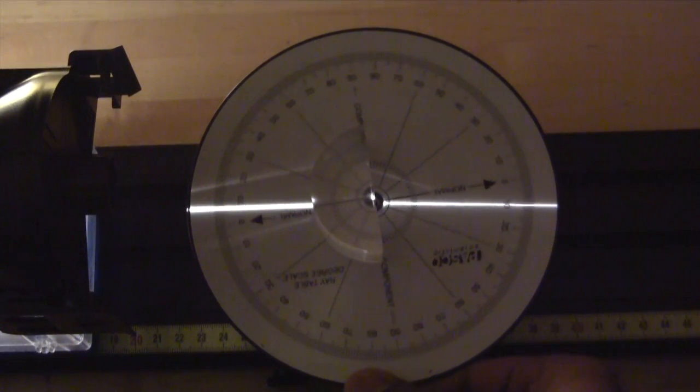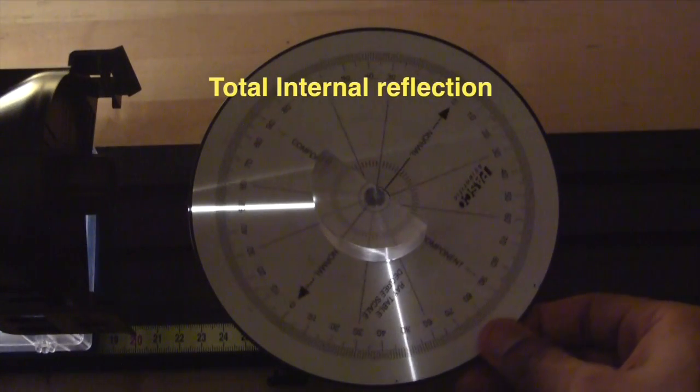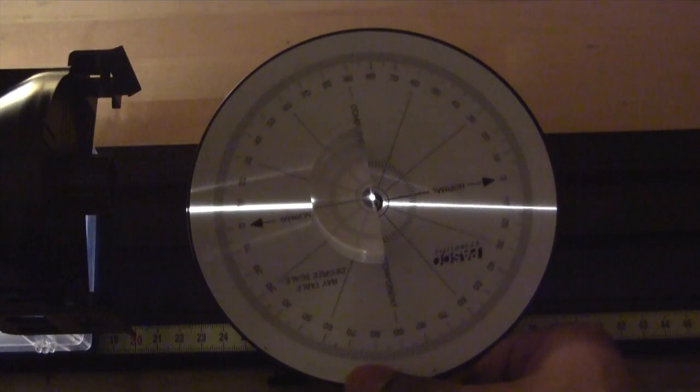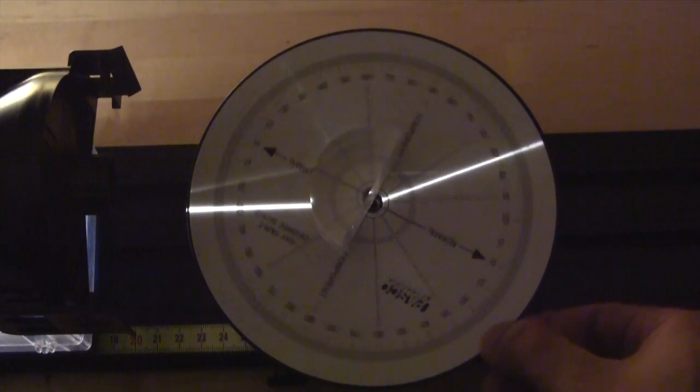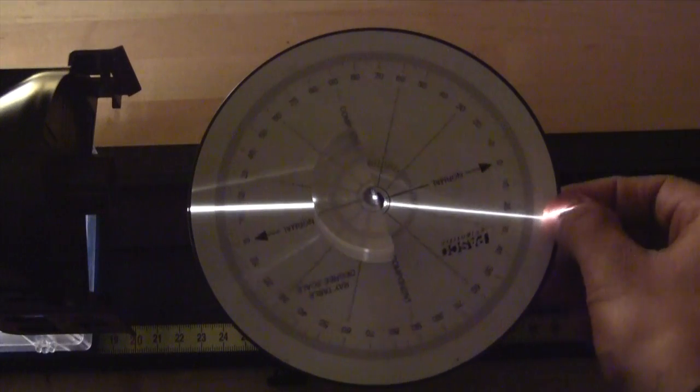If you keep increasing the angle of incidence, then at a point the refracted component ray will disappear. This is called the critical angle. Turning the table further, you will observe that the beam is reflected inside the acrylic. This is called total internal reflection.